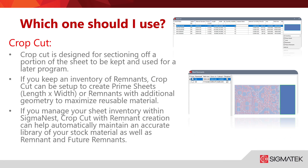So which one should you use? Crop cutting is designed for sectioning off a portion of the sheet to be kept and used for a later program. If you keep and maintain an inventory of any kind of skeletons or remnants, this is going to be a good option. Crop cut can be used to create prime sheets — that's any kind of rectangular or square geometry, length by width — or remnants with additional geometry to maximize that reusable material.